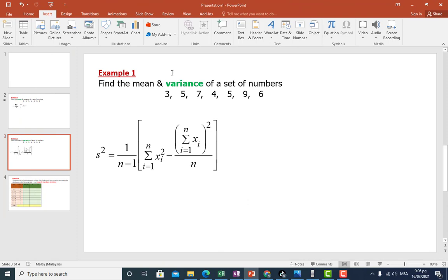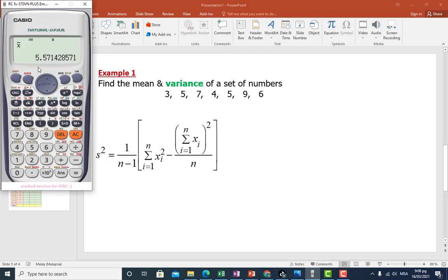Okay, next we are going to calculate variance. Since the data is already in the calculator, now we are going to press shift 1. Choose sum, press 3.